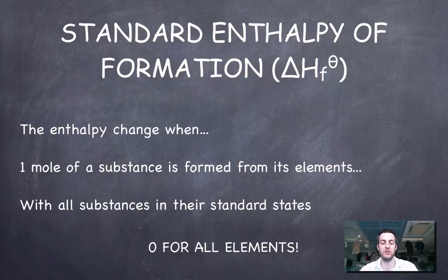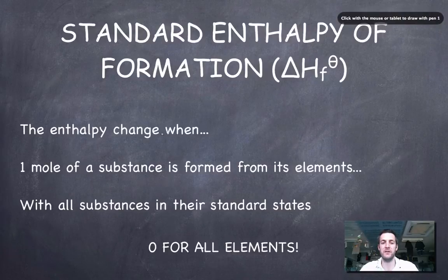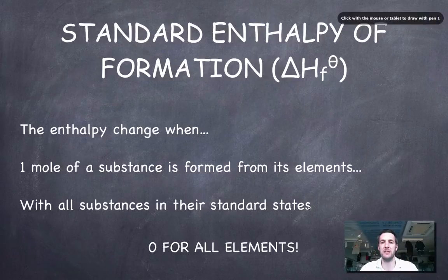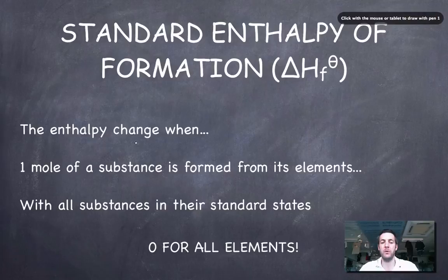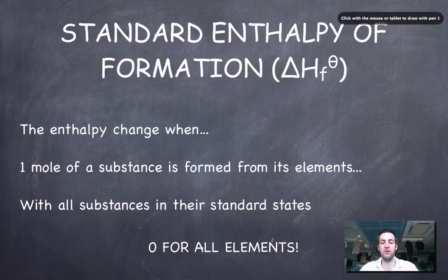Right, so our first definition here, the standard enthalpy of formation. Let's just have a look at the symbols first. Delta H for change in enthalpy. Formation is represented by this little letter subscript F, and then we've got superscript theta, or as I learned it in a British school in London, the underground sign. So delta H F underground sign, or the standard enthalpy of formation. This is the enthalpy change when, and a lot of these definitions start with this, the enthalpy change when one mole of a substance is formed from its elements, and everything is in its standard state. Now, if you think about this for a moment, if we're talking about one mole of any substance being formed from its elements in their standard states, if we talked about an element in its standard states being formed from its elements in their standard states, then we wouldn't expect an enthalpy change for that, because it's one thing turning into the same thing. So it's zero for all elements by definition.